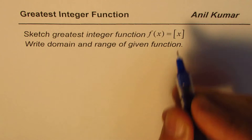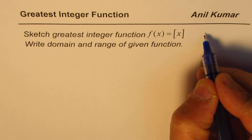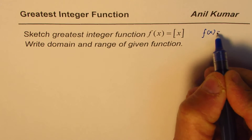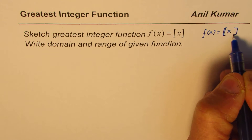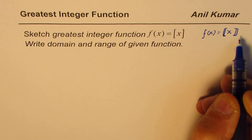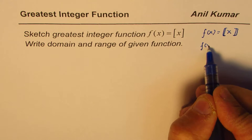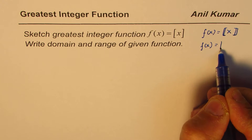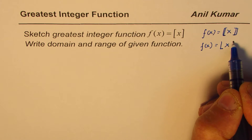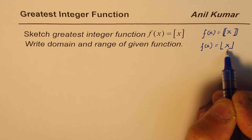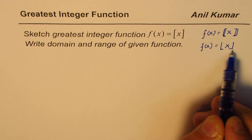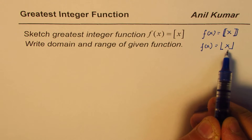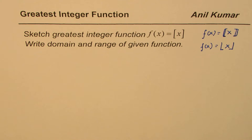At times we also write this as f(x) with double brackets. You will see that in textbooks. Sometimes it is also written with a floor notation — taking the lower value — so the greatest integer function is also called the floor function.